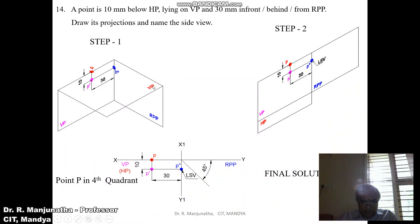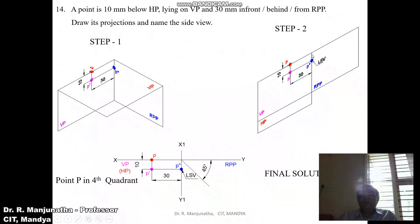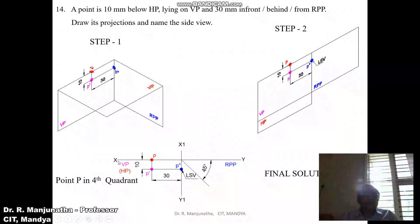Looking from the side view, we can see the distances from the front view and the top view. Since the point is lying on VP, it will be on HP. Since it is in front of RPP, this is going to be the left side view.